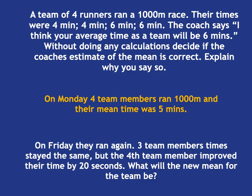But that 20 seconds is going to have to be divided by four, because when you work out the mean, you are sharing it between four members. And so 20 divided by four is five seconds. And so the mean time will have improved by five seconds.